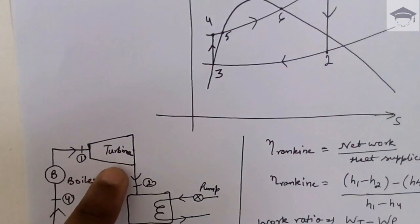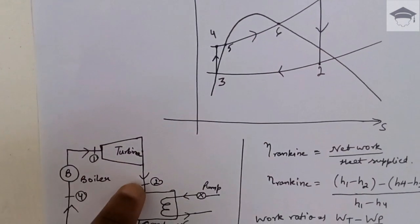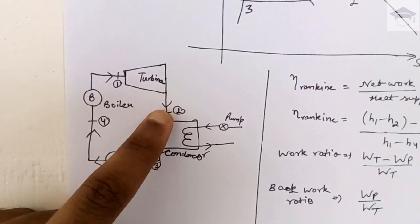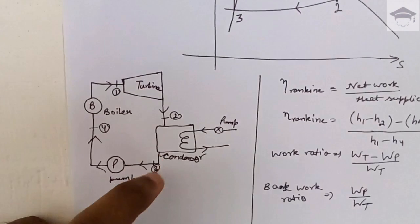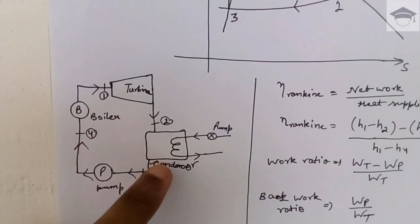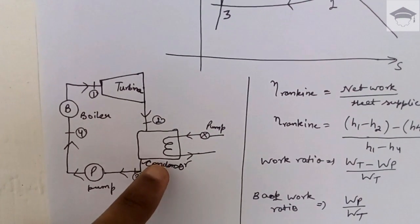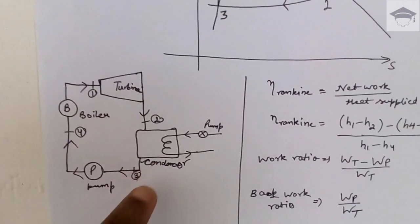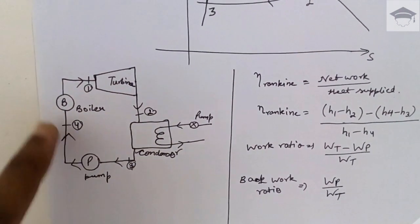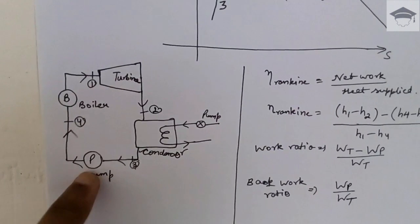After the turbine, the steam which has already performed work is passed through the condenser. In the condenser, heat is removed and steam is converted into warm water. This water is then circulated back to the boiler through the help of a pump, which pumps the water from point three to point four, back to the boiler.